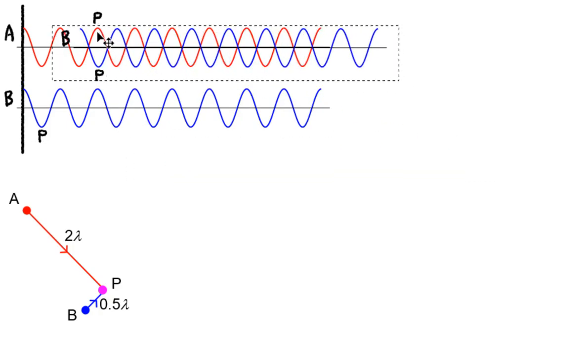Now do you see that the wave that arrives from A, the red one, and the one that arrives from B, the blue one, they are now arriving in anti-phase. So as far as P is concerned, we have two waves which are in anti-phase with each other. And therefore what's going to occur at point P is a destructive interference.